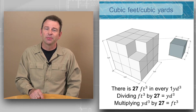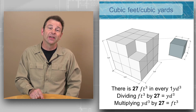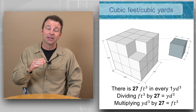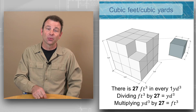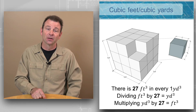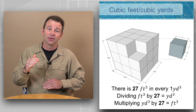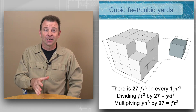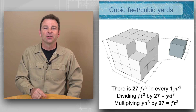Now let's talk about cubic feet to cubic yards. We know that a square yard is three feet by three feet. If we add an equal dimension of height, that becomes a cube — a three foot long by three foot wide by three foot high cube. And we can fit 27 cubic feet into that cubic yard.